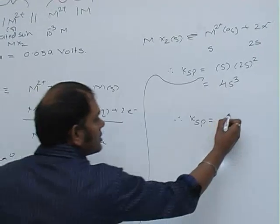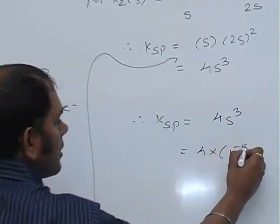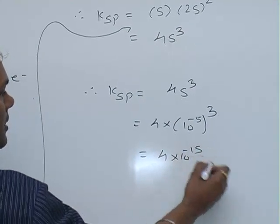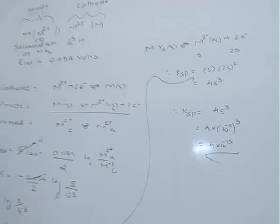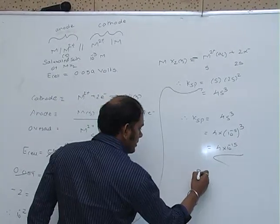If we put this value, we get Ksp for this insoluble salt equals 4S³, that is 4 times (10⁻⁵)³, which becomes 4 × 10⁻¹⁵. Therefore, regarding the question, the answer comes out to be B.